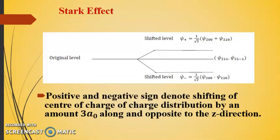As a result of this, we have three energy levels now. Initially we have the four states having the same energy at suppose this was the energy and we have the four states psi_200, psi_210, psi_211, psi_21 minus 1.